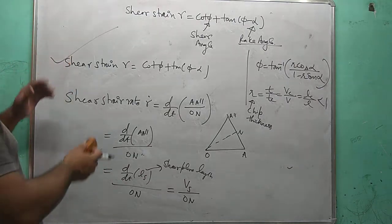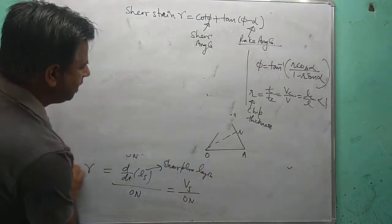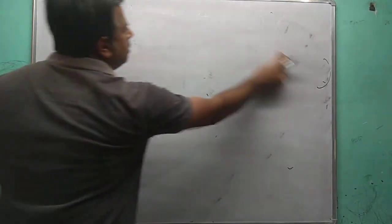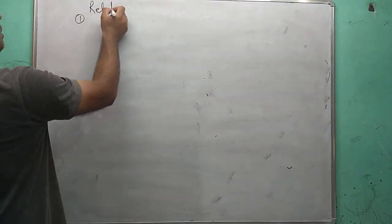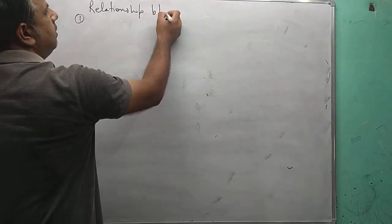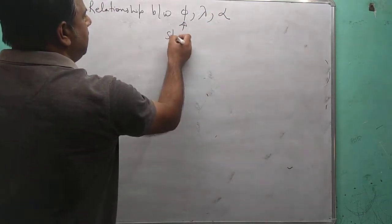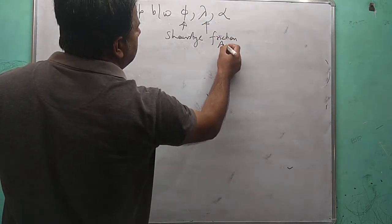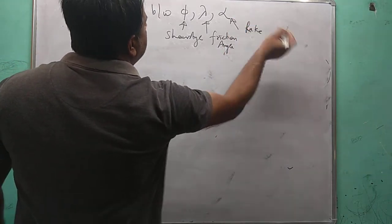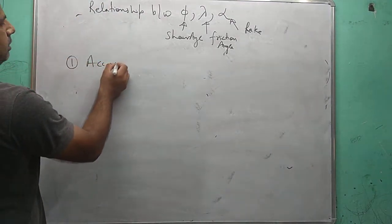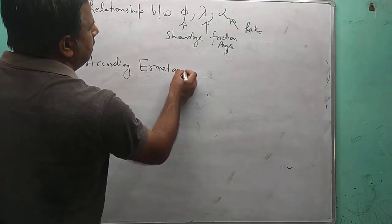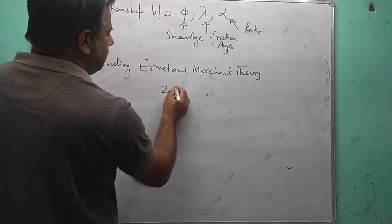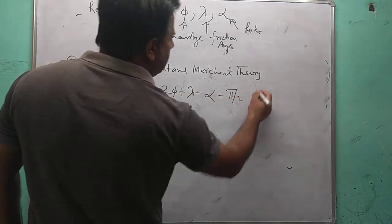Now I want to explain the relationship between the shear angle phi, friction angle lambda, and rake angle alpha. According to Ernst and Merchant theory, this relationship comes to: phi plus lambda minus alpha is equal to pi by 2. This is an important relationship used to solve numerical problems.